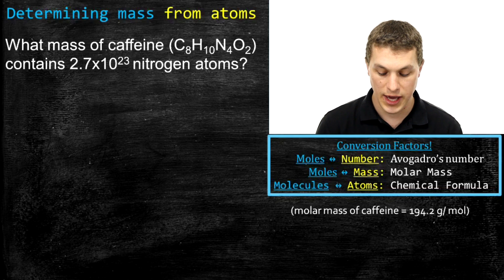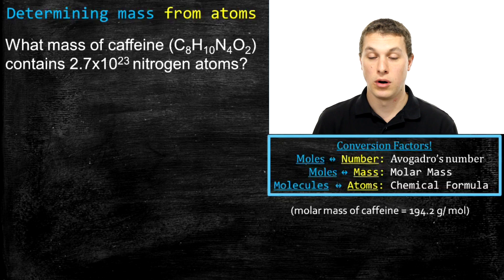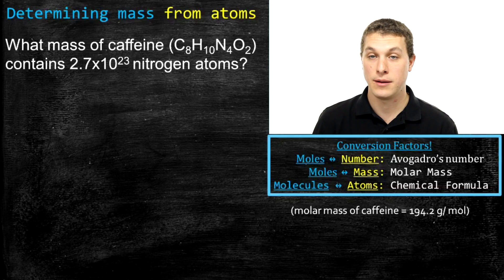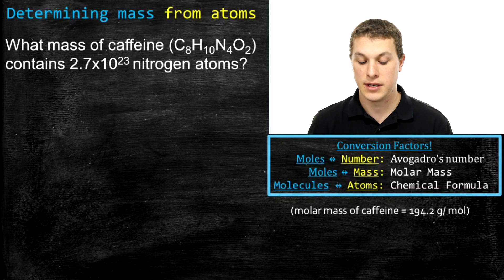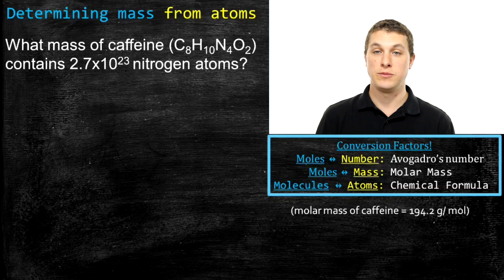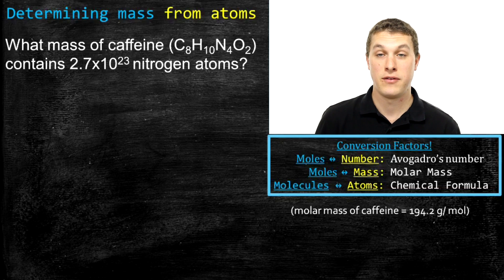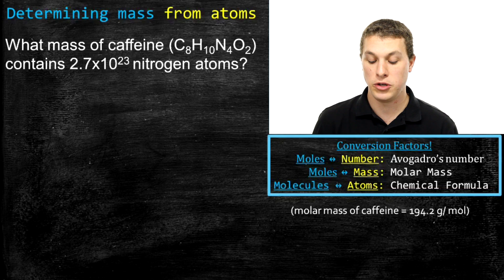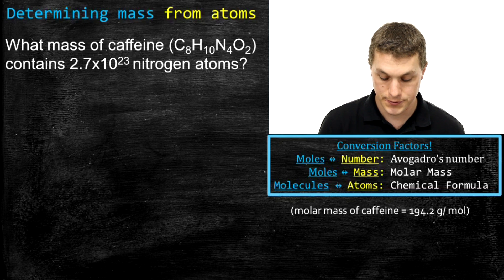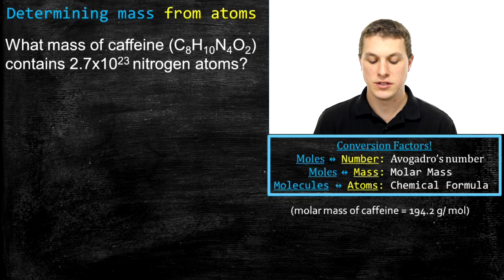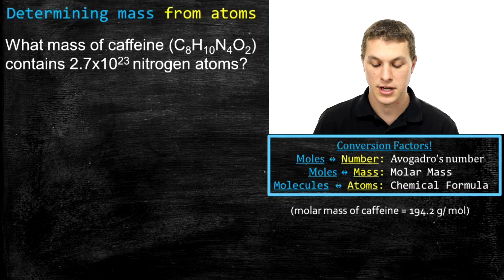This time I've listed the conversion factors rather than summarizing steps. We have three: Avogadro's number goes between moles and number of particles; molar mass goes between moles and mass; and the chemical formula goes between molecules and atoms of a specific type — or equivalently between moles of molecules and moles of a particular atom. The question asks: what mass of caffeine contains 2.7 × 10²³ nitrogen atoms?